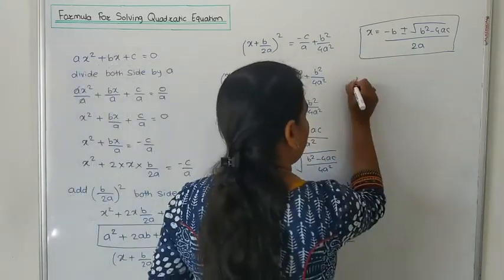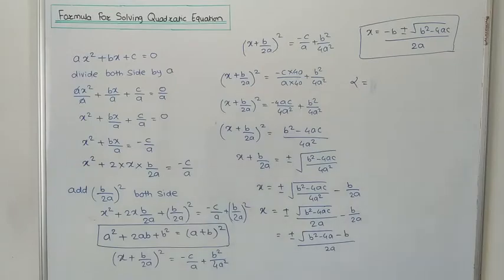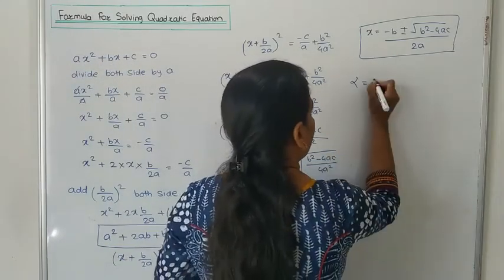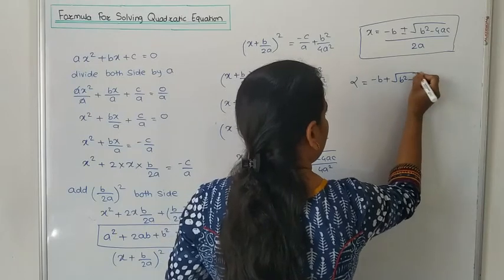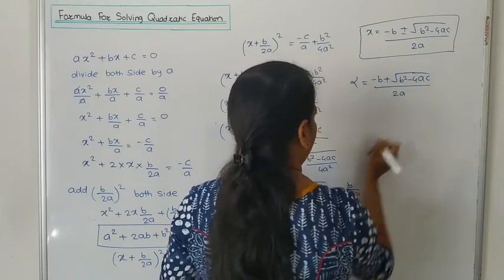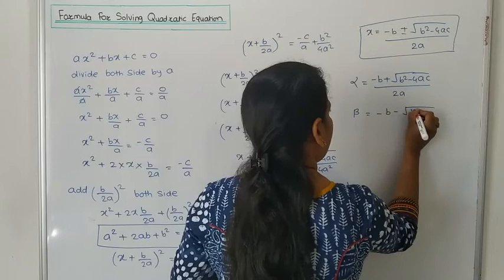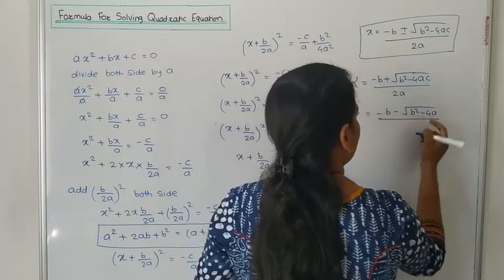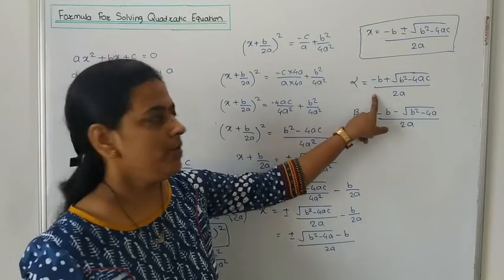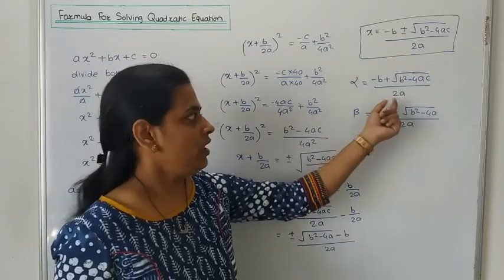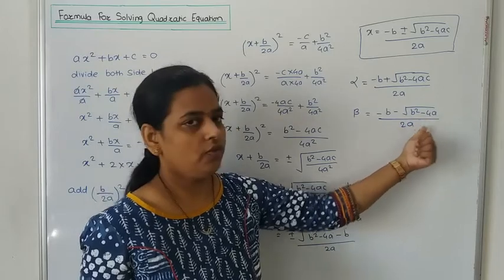Suppose we use alpha for the plus case: α = (-B + √(B² - 4AC)) / 2A. And for beta, the minus case: β = (-B - √(B² - 4AC)) / 2A.